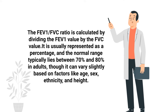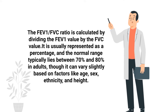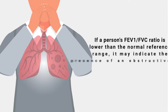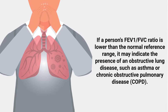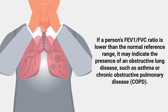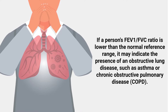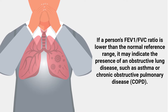The normal range typically lies between 70 and 80 percent in adults, though it can vary slightly based on factors like age, sex, ethnicity, and height. If a person's FEV1 to FVC ratio is lower than the normal reference range, it may indicate the presence of an obstructive lung disease.